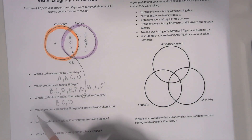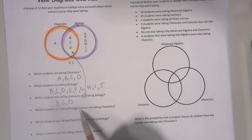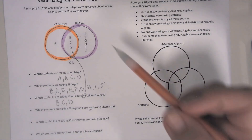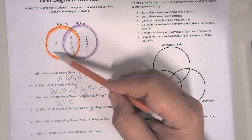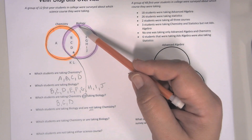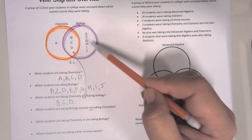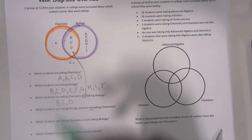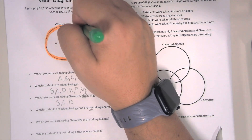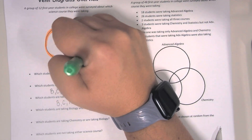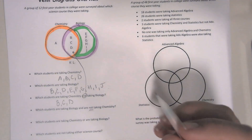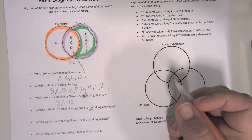The next question says which students are taking biology and are not taking chemistry? So if you're taking chemistry, you're in the orange circle. If you're taking biology and you're not taking chemistry, you're basically in the purple circle but not in the orange circle — just the green highlighted area. So that would be E, F, G, H, I, J.